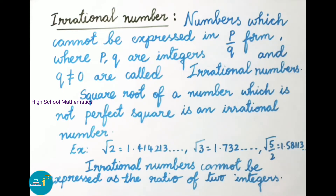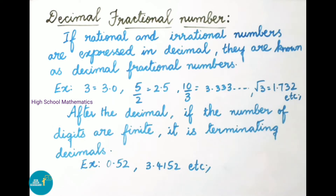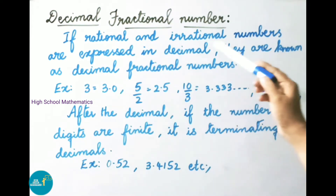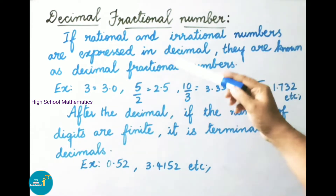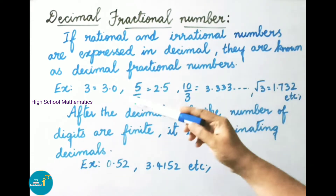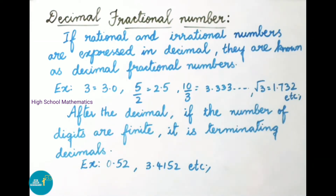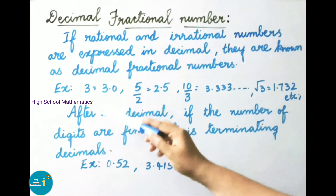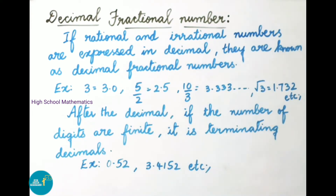Next, we shall see decimal fractional numbers. If rational and irrational numbers are expressed in decimals, they are known as decimal fractional numbers. Examples: 3 can be written as 3.0; 5/2 can be written as 2.5; 10/3 can be written as 3.333...; √3 can be written as 1.732.